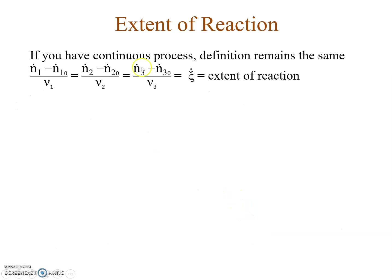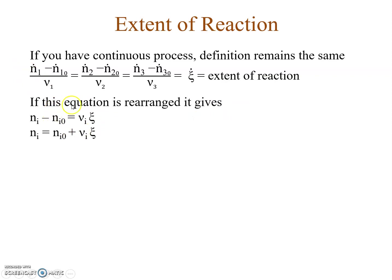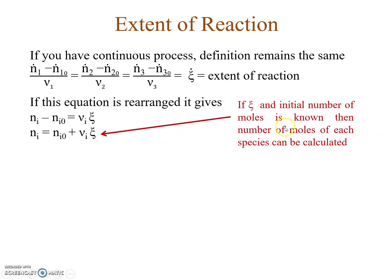For a continuous process, the same definition applies with Ni₀ as the inlet molar flow rate and Ni as the outlet molar flow rate. Rearranging, the final number of moles is: Ni = Ni₀ + νi × ζ. If we know zeta and the initial number of moles, we can calculate the final moles of each species. Zeta is calculated using known information about one component, and then used to find the remaining species.